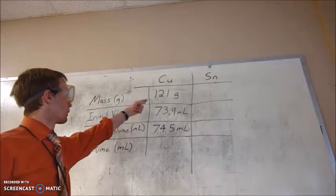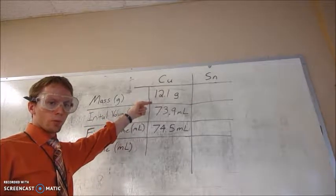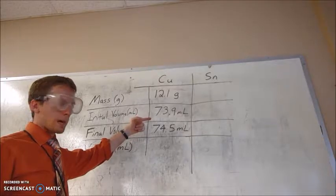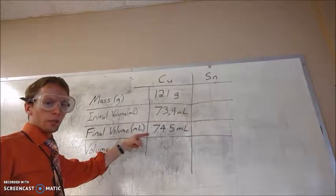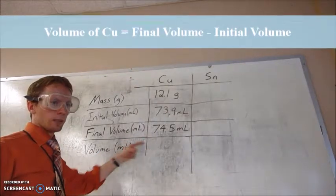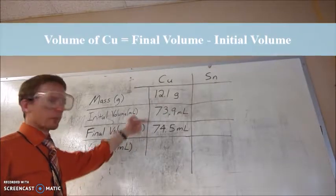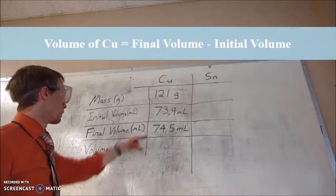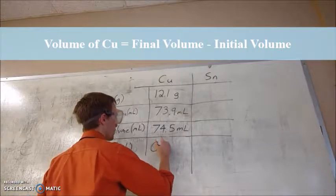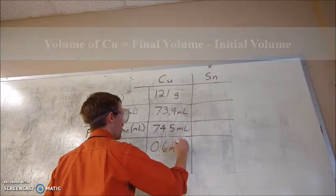In our data table, we recorded the mass of the copper bar, 12.1 grams. The initial volume in the graduated cylinder before we put the copper in. The final volume after we put the copper in the graduated cylinder. And now what we'll do is calculate the volume of the copper, which is the difference between the two water volumes. So 74.5 minus 73.9 is going to give us 0.6 mL.